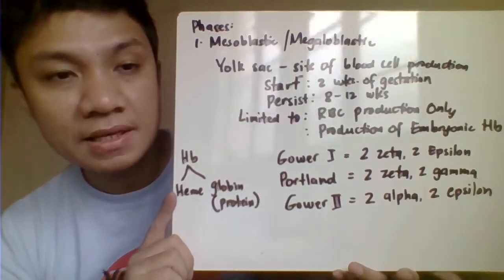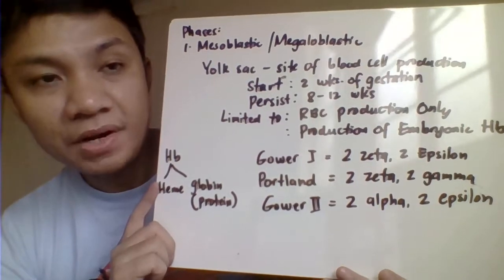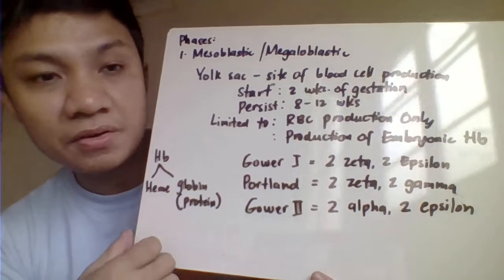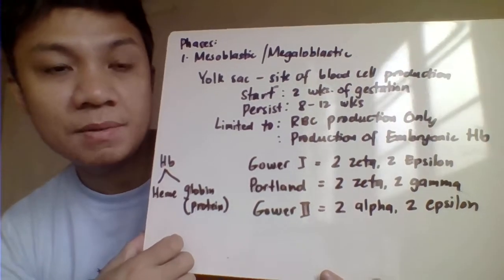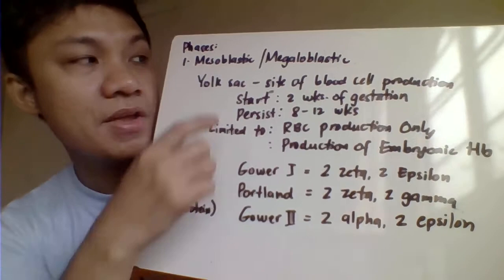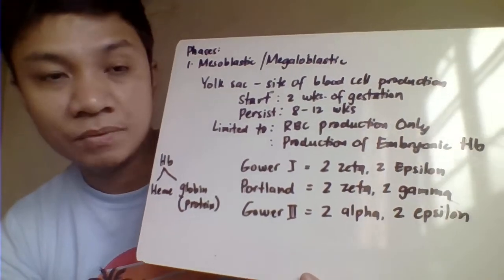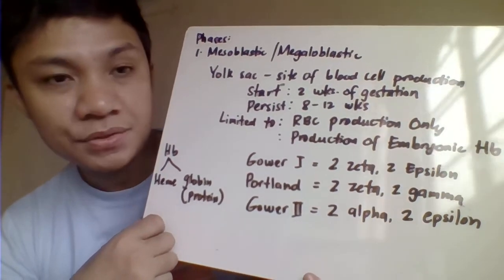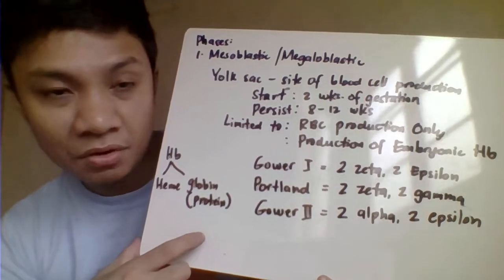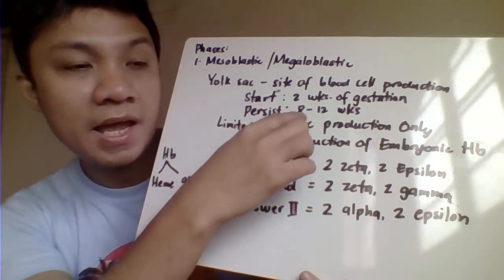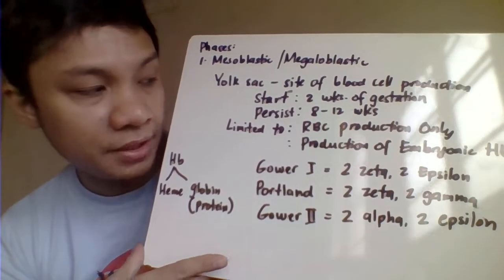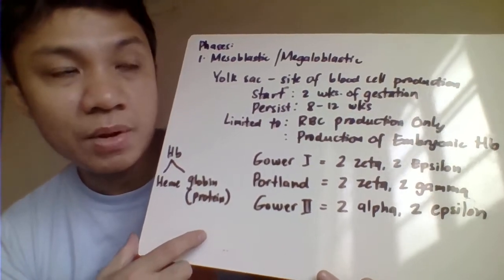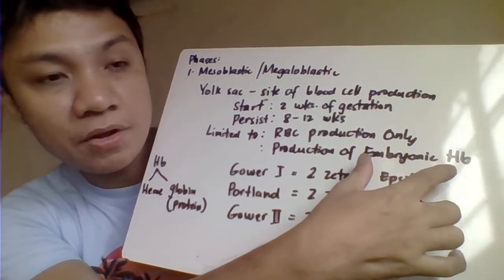There are three stages of blood cell production in hematopoiesis. The first is the mesoblastic phase, also called the megaloblastic phase. In this phase, the yolk sac becomes the first site of blood cell production; however, cells produced here are limited only to RBC production. This starts at the second week of gestation and persists for blood cell production within 8 to 12 weeks age of gestation. This stage is also limited to the production of embryonic hemoglobin.